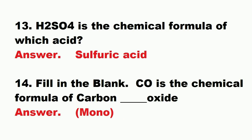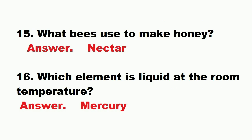Question: name the largest planet in the solar system. Answer: Jupiter. Question: H2SO4 is the chemical formula of which acid? Answer: sulphuric acid. Question: fill in the blank — CO is the chemical formula of carbon blank oxide. Answer: carbon monoxide.